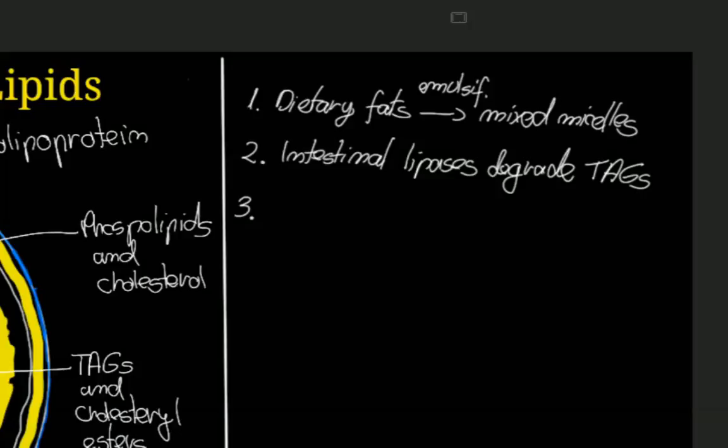These and other breakdown products can then be taken up by the intestinal mucosa and converted back into triglycerides. So in step 3, fatty acids and other products are converted back into triglycerides after they go through the intestinal wall.